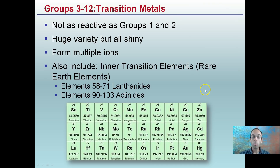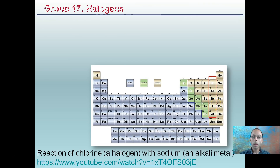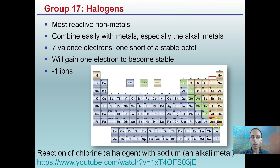Groups 3 through 12 are the transition metals. They're not as reactive as groups 1 and 2 — a huge variety, but all are shiny in nature. They form multiple ions and also include inner transition elements and rare earth elements. Continuing along the periodic table, group 17 are the most reactive non-metals — they're called the halogens. They combine easily with metals, especially alkali metals. They have seven valence electrons, one short of a stable octet, and they tend to gain an electron to become stable, forming a -1 ion.